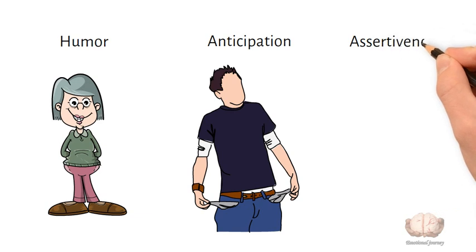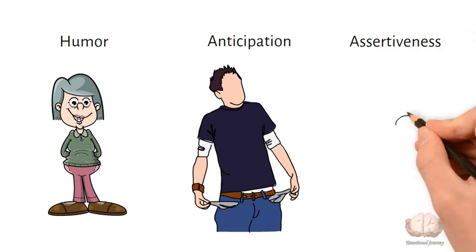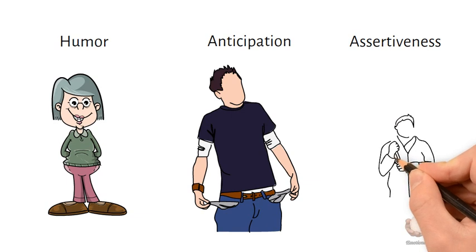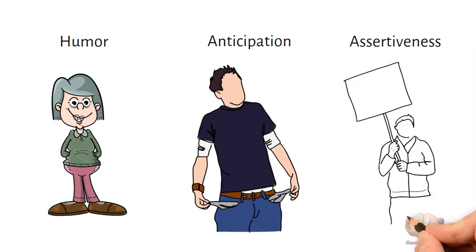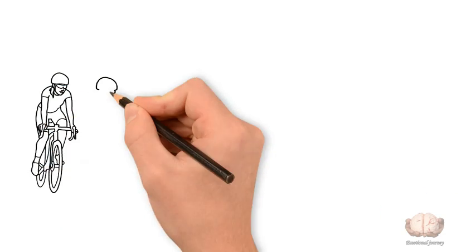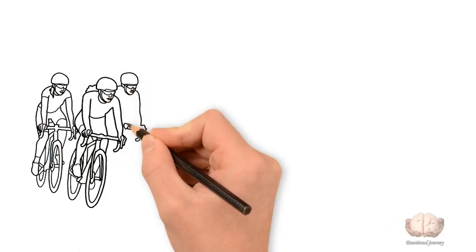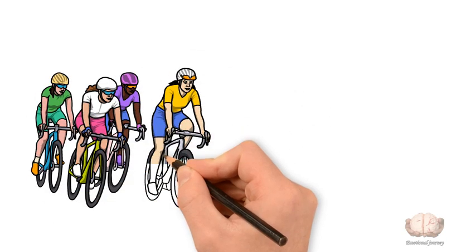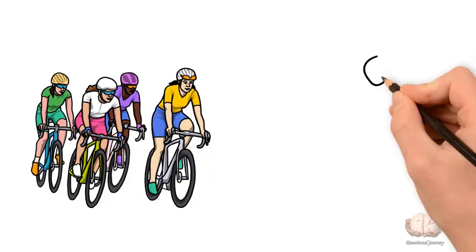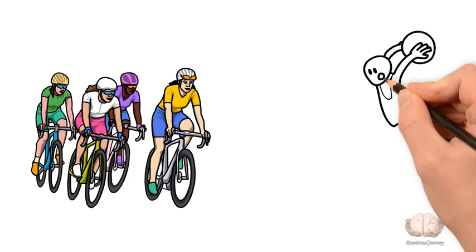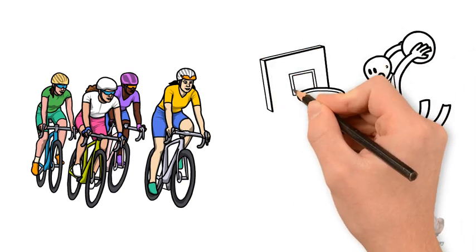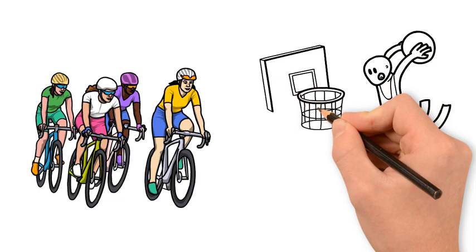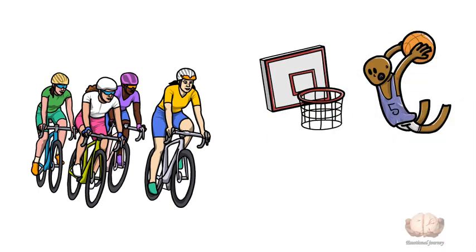Assertiveness: respectfully expressing your thoughts, feelings, and needs. For example, clearly communicating with others about your preferences. These mature defenses demonstrate adaptive coping, emotional regulation, and the ability to balance inner needs with external realities. While no defense is completely healthy, level four mechanisms allow conflicts and stressors to be addressed more directly. The person remains in touch with their feelings while avoiding excessive repression or denial.